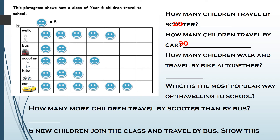How many children walk and travel by bike altogether? You need to find out how many children walk and how many travel by bike and add them together. 10, 15, 20, 25 walk, and 15 go by bike, so 25 plus 15 makes 40. Which is the most popular way of travelling to school? Looking at the pictogram for the most smiley faces — that would be the car, so by car.